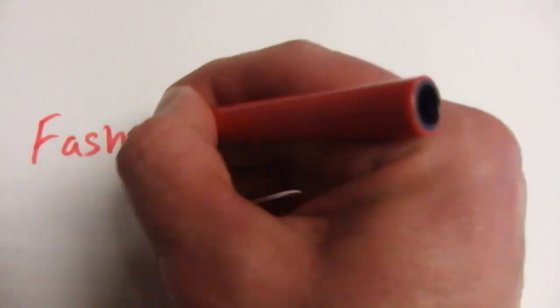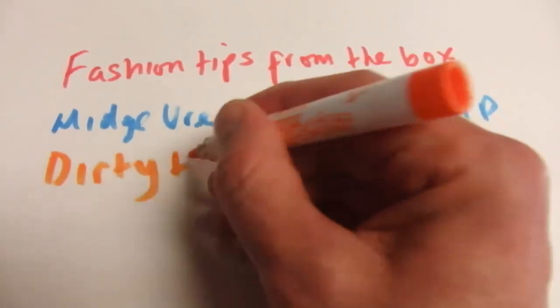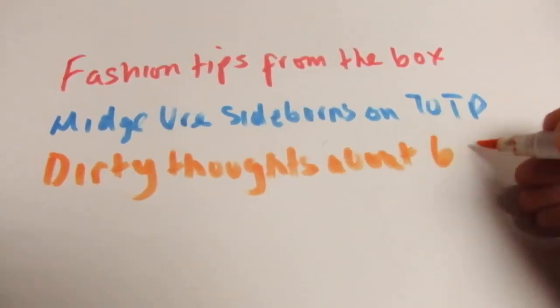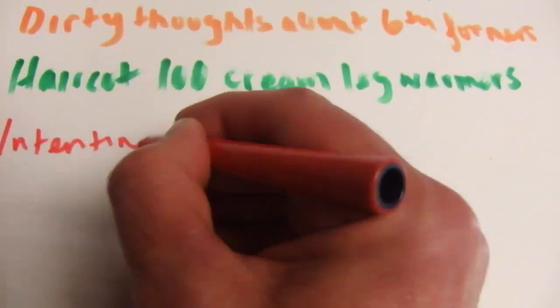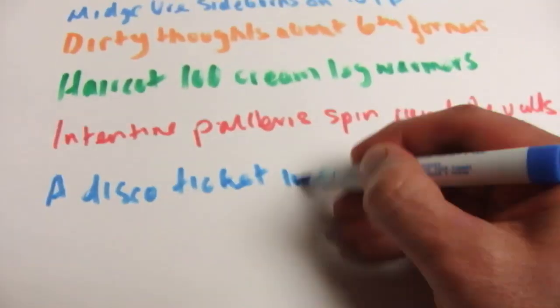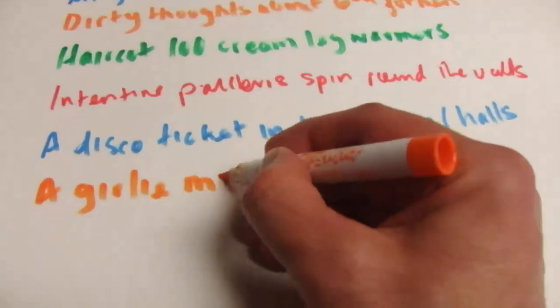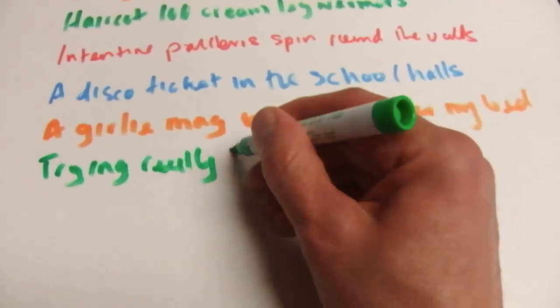Fashion tips from the box, nature cyberdoms off of the pups. Dirty thoughts about six-formers, hair gum one hundreds, cream-legged warbirds, test-time patterns. Spin round a wall, a disco ticket in the school horn, a girly mag hidden under my bed. I'm trying really, really